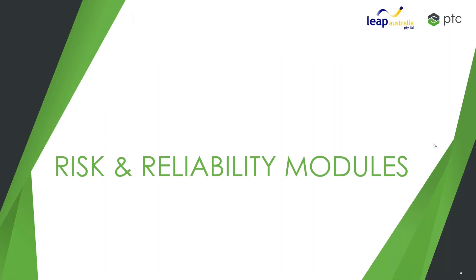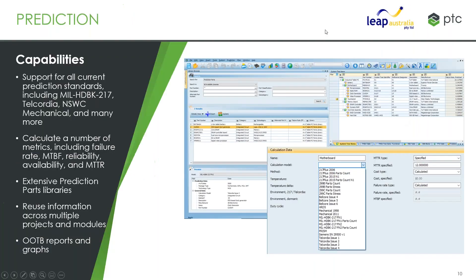I'll be doing a deeper dive on those selected modules that Paul mentioned earlier. So the first step is essentially prediction. When we're talking prediction, we're looking at analyzing things like your failure rates, mean time before failure — all those data and metrics that we might encounter when performing these sorts of analyses.